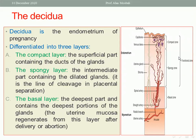The decidua is the endometrium of pregnancy. During pregnancy it differentiates into three layers: the compact zone containing the ducts of the glands and the capillaries; the spongy zone containing the glands and vessels — importantly this is the line of cleavage and placental separation; and the basal layer, the deepest part, containing the deepest portion of the glands, from which the uterine mucosa regenerates after delivery or abortion.